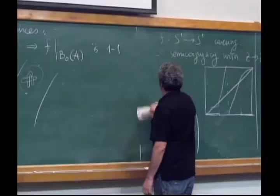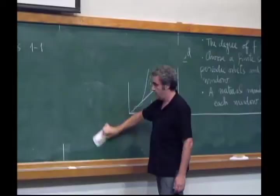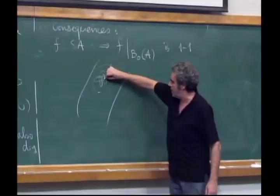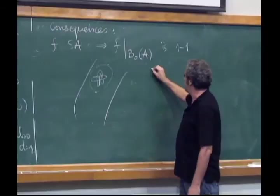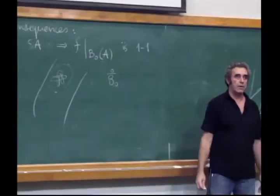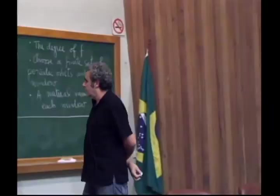A second conclusion: modulo diffeomorphisms in the immediate basin — the immediate basin may contain an invariant set not in it but in the interior of its closure. You can have, for example, a horseshoe, or any diffeomorphism you like.